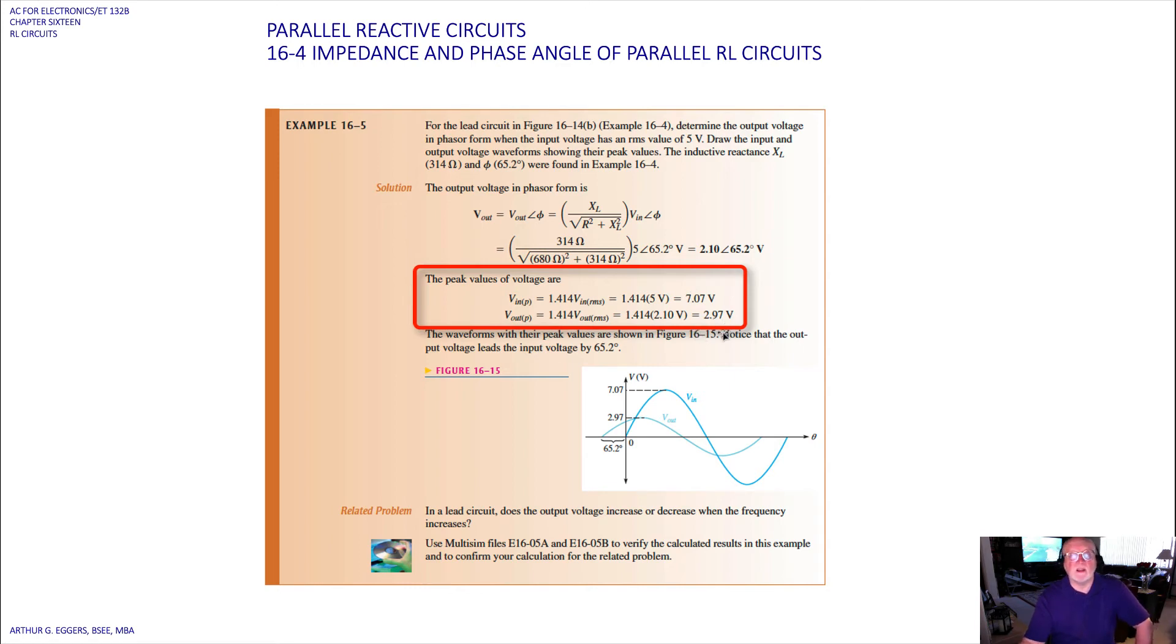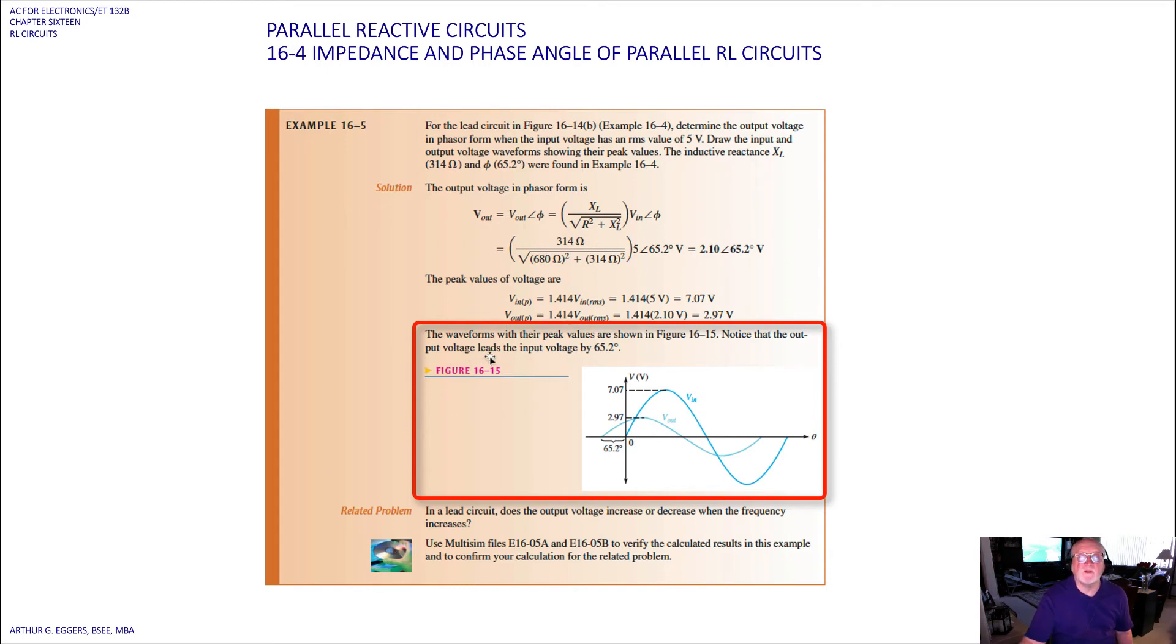So the waveforms with their peak values are shown in the diagram. Notice that the output voltage leads the input voltage by that angle of 65.2 degrees. We can see that what we calculated here is the maximum values of each, V_in and V_out, and we have V_in then starting from the origin. V_out then is leading by 65.2 degrees.